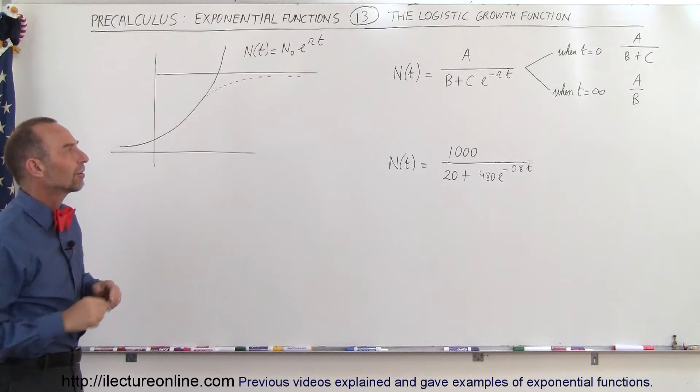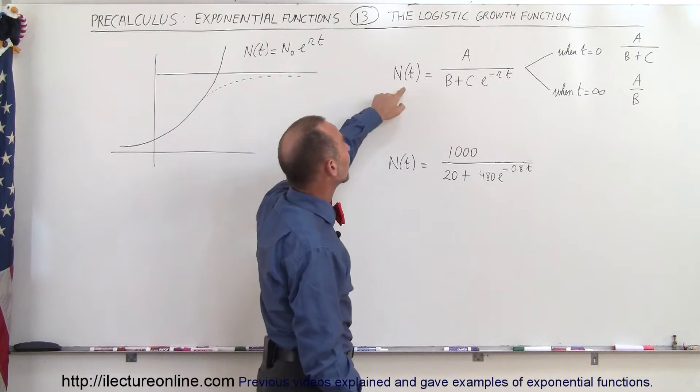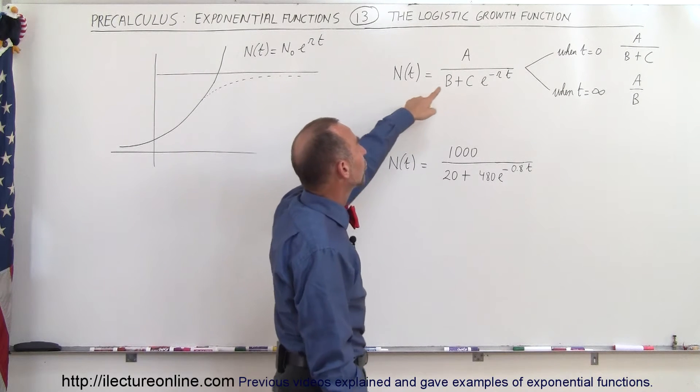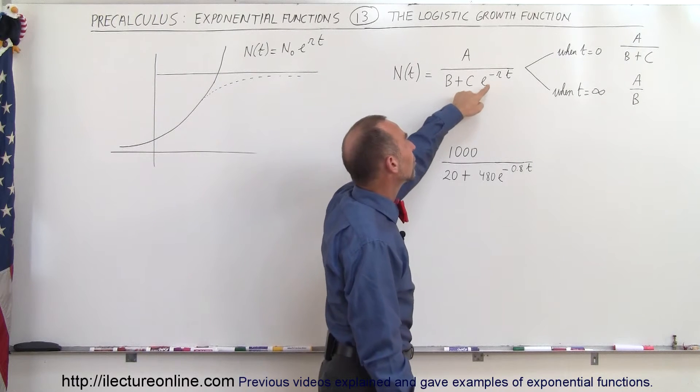There's a lot of situations that use this kind of example. The general equation of the logistic growth function is that the amount at any point in time is equal to some constant A divided by another constant B plus C times e to the minus rt.